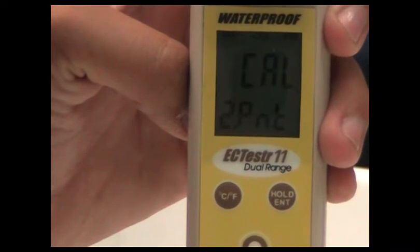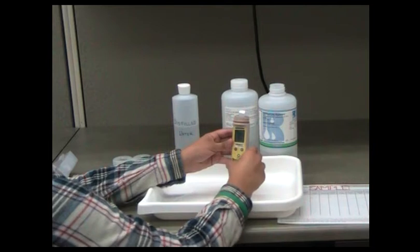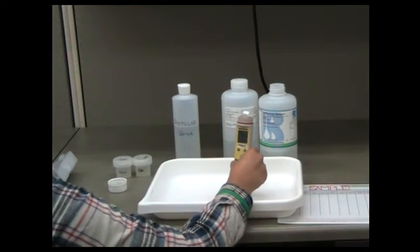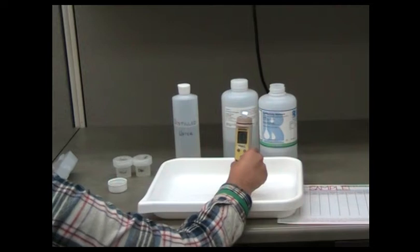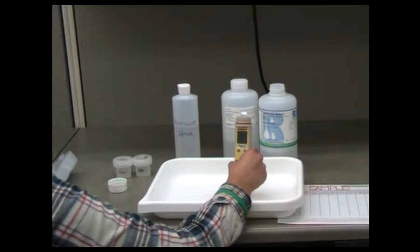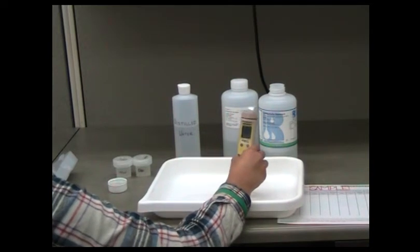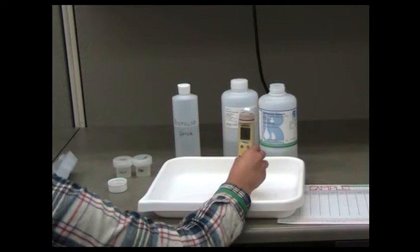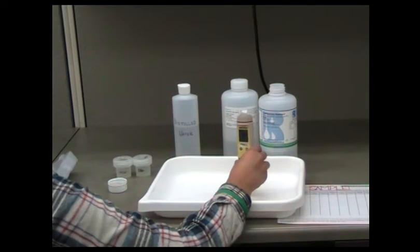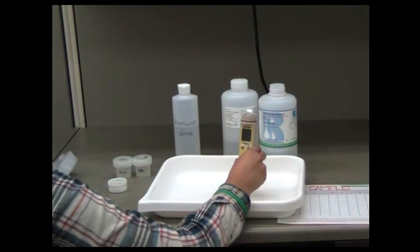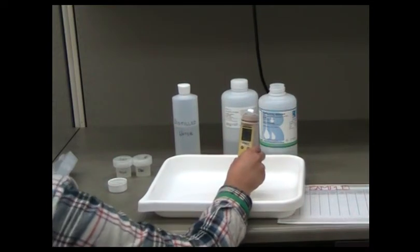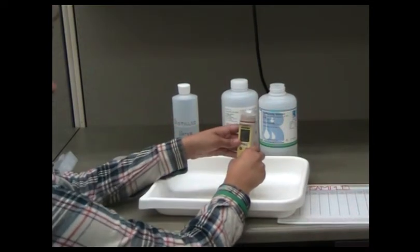2PNT should also flash on the screen. This means you have entered the two-point calibration process. The upper reading on the screen now displays the measured conductivity, while the lower reading displays the default uncalibrated conductivity reading. If the value displayed does not match the standard solution, use the increase or decrease buttons to correct the displayed value to that of the calibration standard solution.